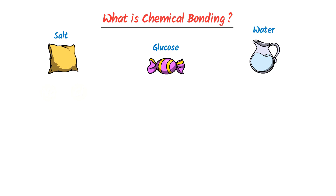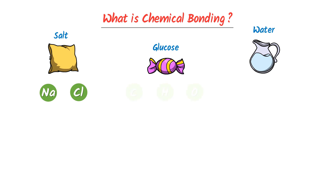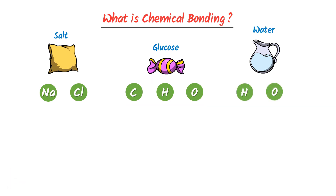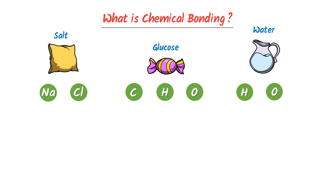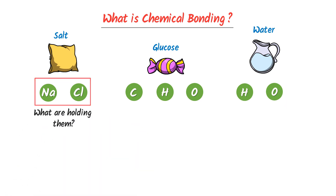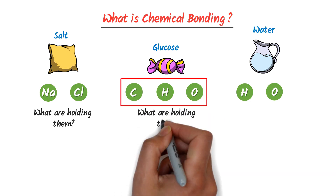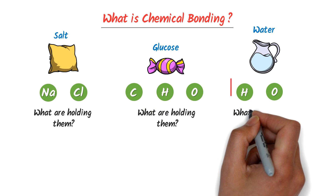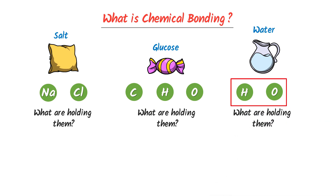We know that salt is made from two atoms like sodium and chlorine. Glucose is made from three atoms like carbon, hydrogen, and oxygen. While water is made from two atoms like hydrogen and oxygen. Now let me ask you: what is holding sodium and chlorine to form salt? What is holding carbon, hydrogen, and oxygen to form glucose? And what is holding hydrogen and oxygen to form water?